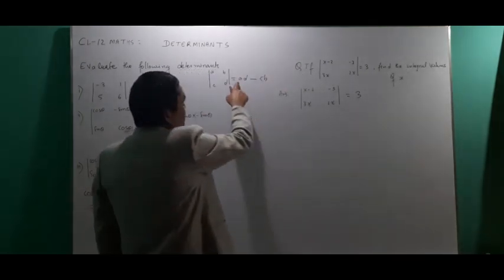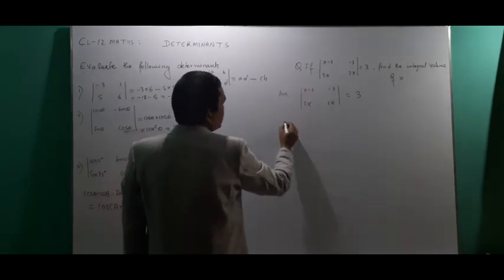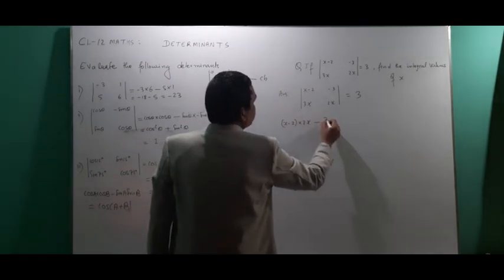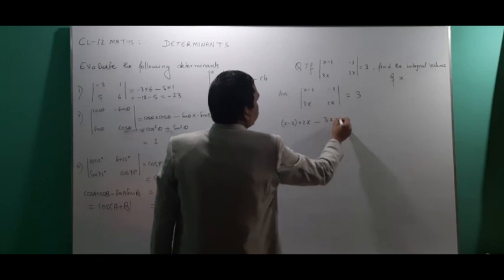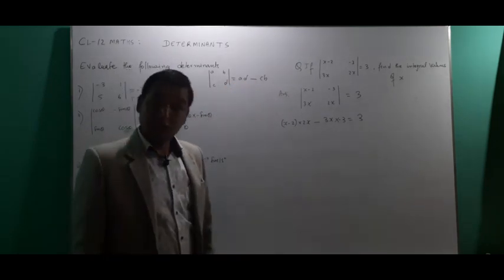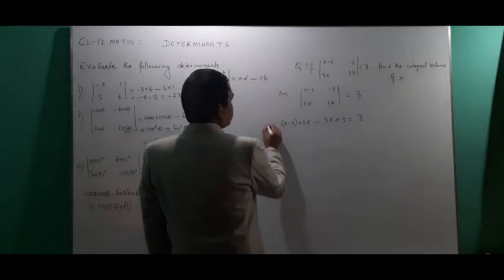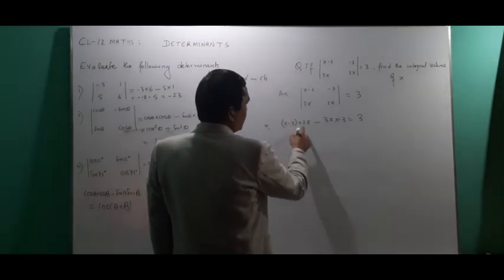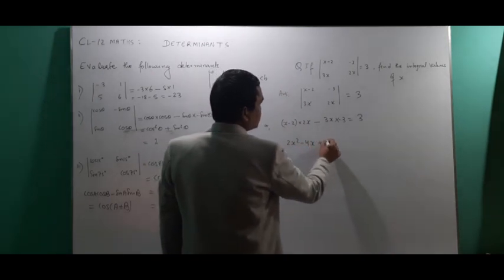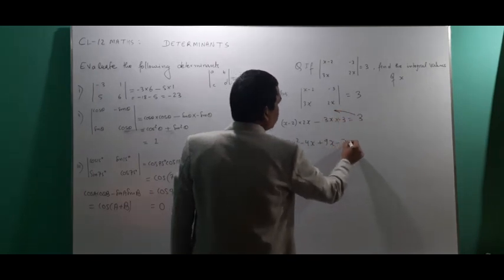According to the formula, (x-2) multiplied by 2x, minus 3x multiplied by (-3), equals 3. This gives us 2x squared minus 4x plus 9x. Taking everything to one side: 2x squared plus 5x minus 3 equals 0.